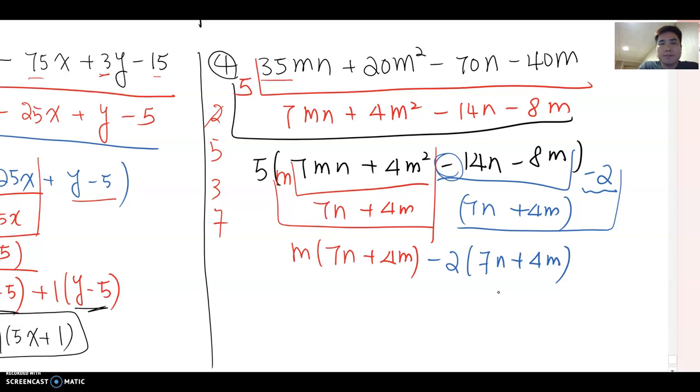Yes, this becomes the common factor again. Therefore the answer becomes 7n plus 4m times m minus 2. But don't forget we factored by five before, so you put five outside here. Then that will be the factoring of this polynomial.